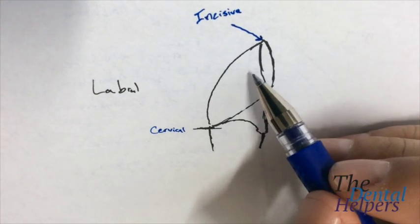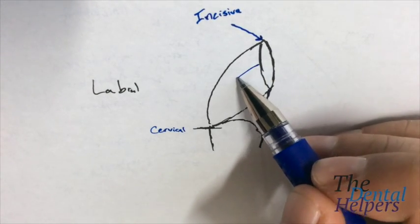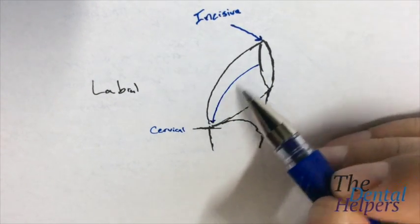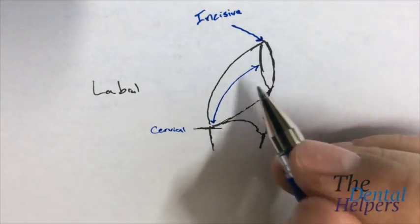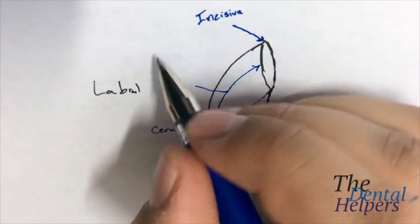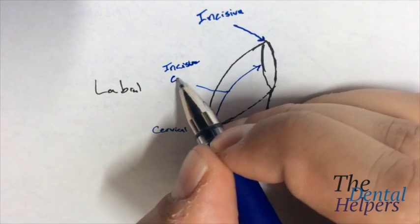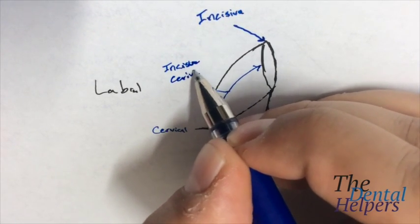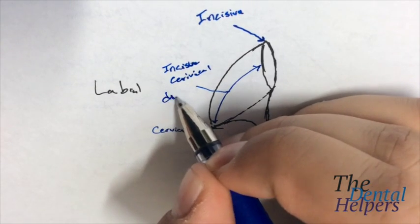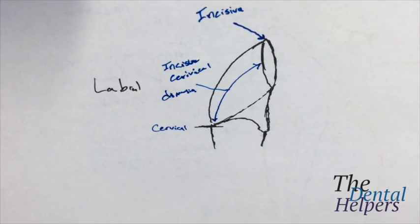So if we want to know this dimension right here, you might have guessed it. This is the incisal cervical dimension. Pretty simple. Sorry for my handwriting.